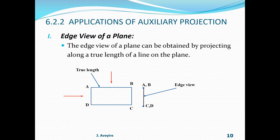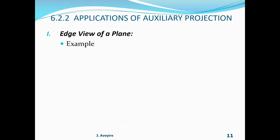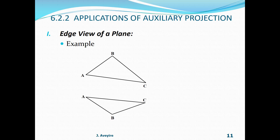Projecting from above, if that yields a horizontal line, then that would be an edge view and side BC will be a true length. Projecting along BC, which is the projector from above, will yield a point view. Likewise, AD will also yield a point view because it is a true length.